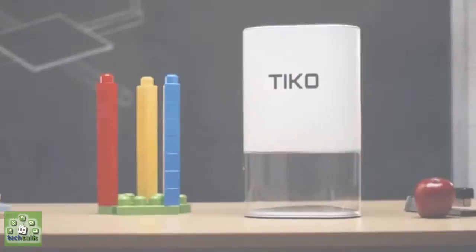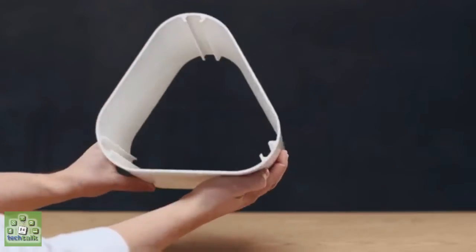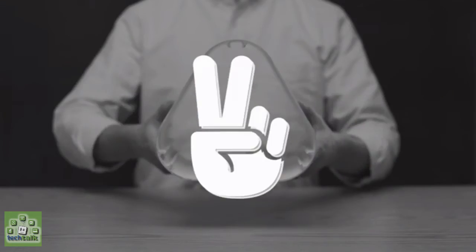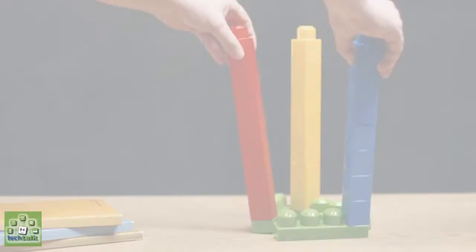Not only can you print large objects, you can actually remove them easily too. Tyco's print bed is flexible, so once your print is done, you simply lift the printer off the bed, then twist to pop off your print.